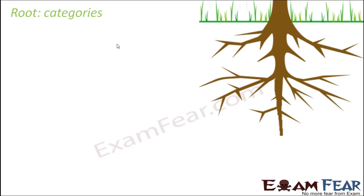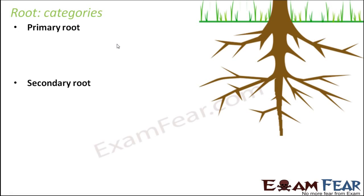Now let us talk about the categories of root — the different varieties or hierarchy of roots. There are three levels: primary root, secondary root, and tertiary root. These are the various categories, meaning the different levels at which roots exist. They are not types of roots, but levels or hierarchy of roots.